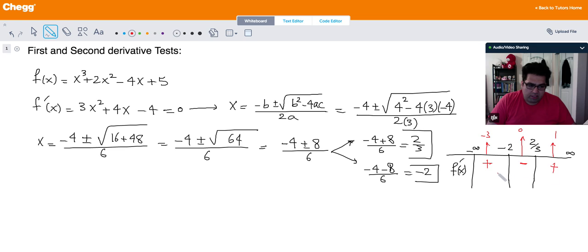And if I plug in 1, I would get positive. So it means the function is increasing here in the interval of negative infinity to negative 2, and then decreasing from negative 2 to 2/3, negative, and then 2/3 to infinity, that's going to be positive.